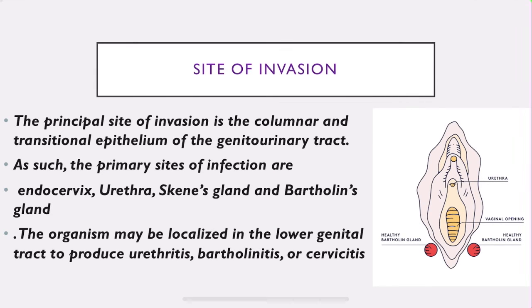The principal site of invasion of Neisseria gonorrhoeae is the columnar and transitional epithelium of the genitourinary tract. The primary sites of infection are the endocervix, urethra, Skene's gland, and Bartholin's gland. Skene's gland is found on the anterior wall of the vagina, and Bartholin's gland is found on the posterior wall of the vagina.